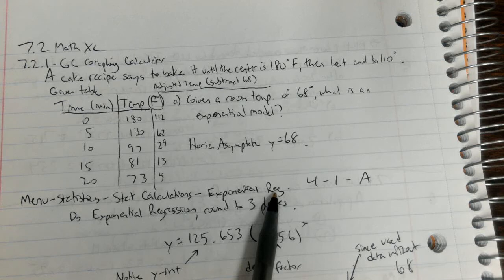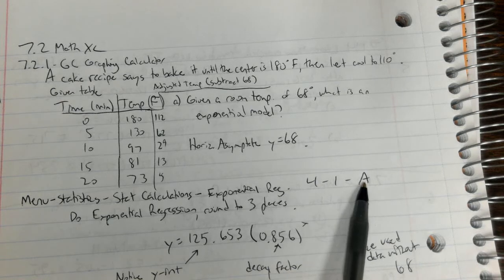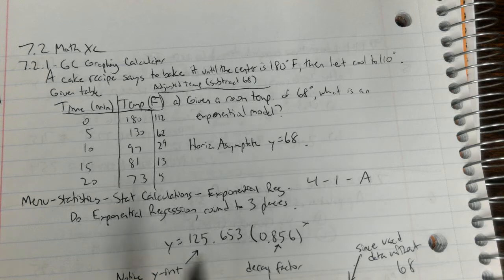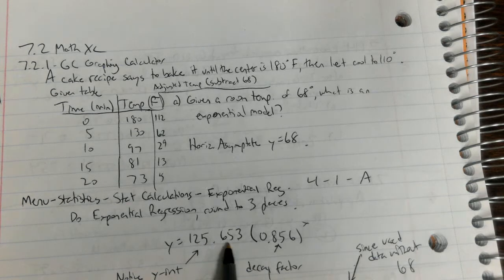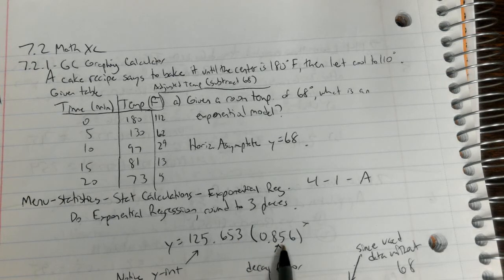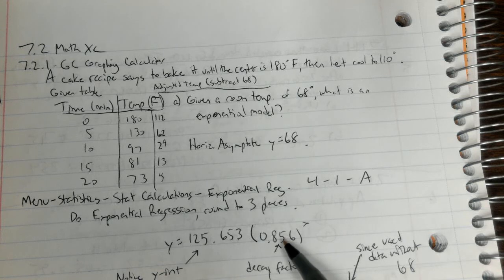So you do your exponential regression, then round it to three places. This one you end up with 125.653 and then your decay factor is 0.856, so you raise that to the x power. It is expected this number should be less than one because you're cooling, in other words you're having a smaller temperature.